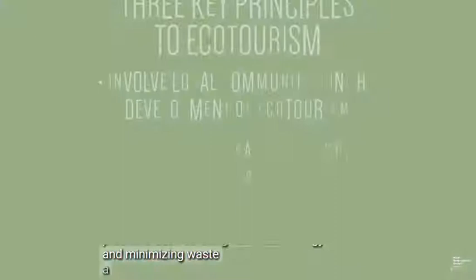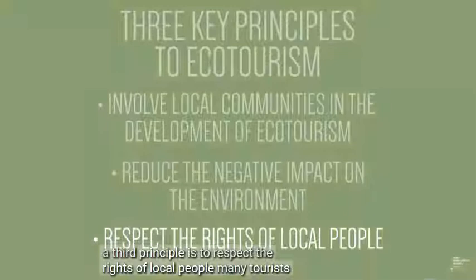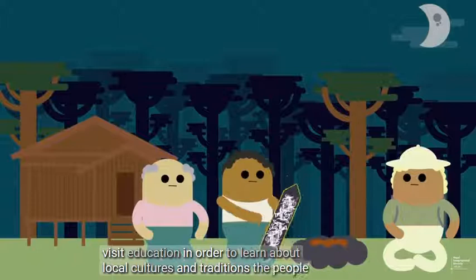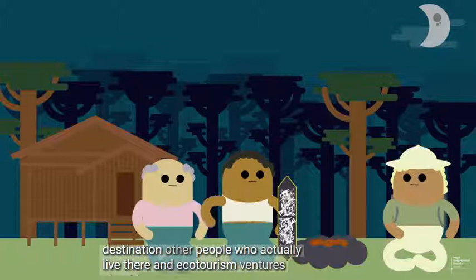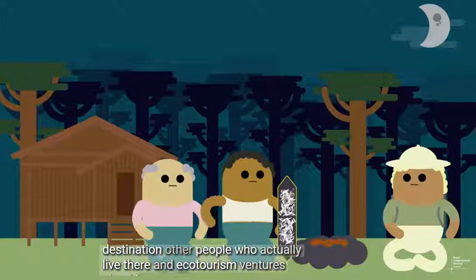The third principle is to respect the rights of local people. Many tourists visit a location in order to learn about local cultures and traditions. The people with the greatest knowledge about a destination are the people who actually live there, and ecotourism ventures should be managed by local communities using their experiences and expertise to promote local cultures and traditions.